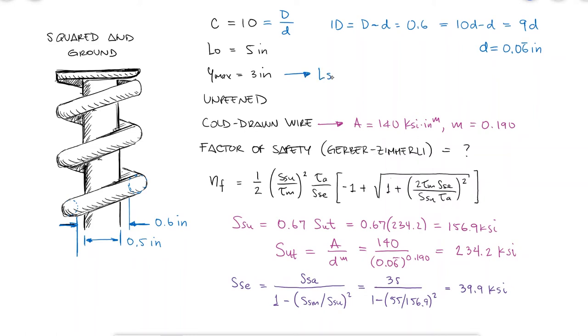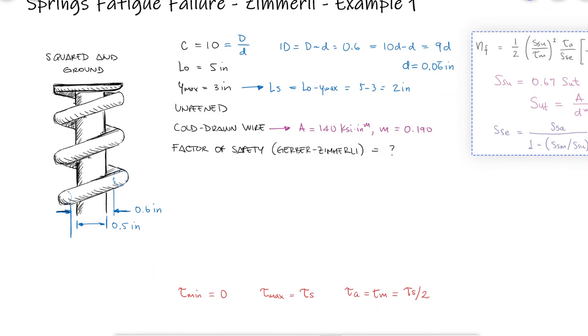If the compression of the spring goes from its free length, zero stress, to its solid length, tau sub s, then both the mean and the alternating stress will be tau s divided by 2.